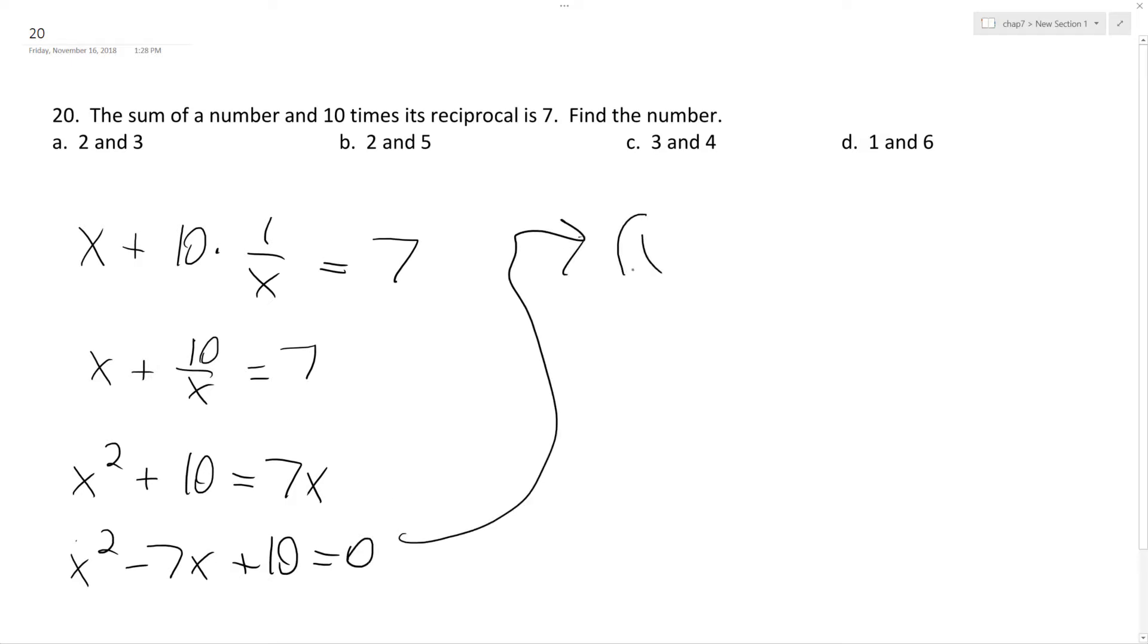Factor this and we get x minus 5, x minus 2. So x is going to be equal to 2 and 5, let's just check.